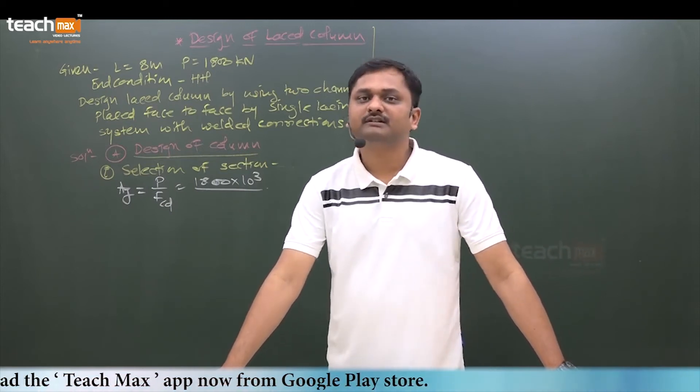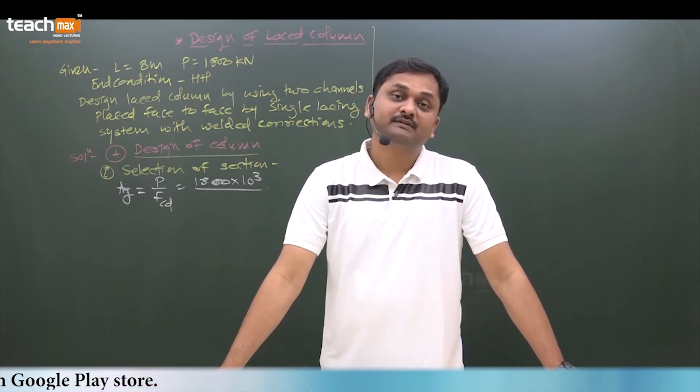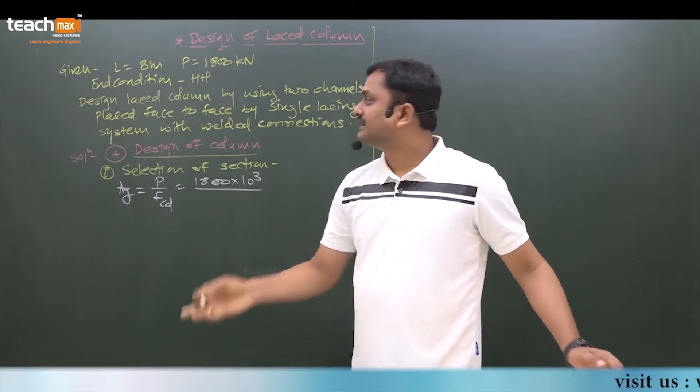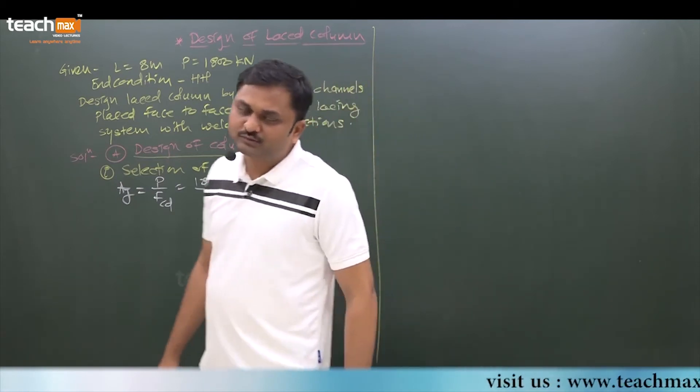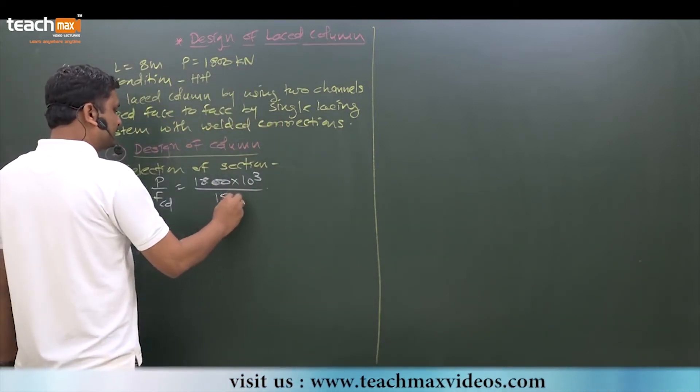Same fcd you can assume for built-up columns also, in between 120 to 180. So here let us take 150, average of these two. Take it 150 and solve this. Automatically your design may be safe.